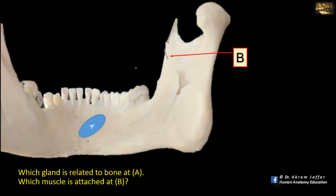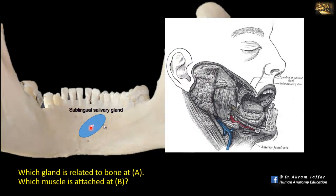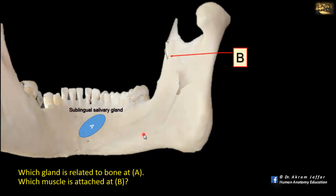Which gland is related to bone at A, and which muscle is attached at B? This is a view of the inside of the mandible. You can see the mylohyoid line — above it we are in the mouth cavity, and below it is the neck or submental region. The gland located in the floor of the mouth above the mylohyoid line is the sublingual gland, situated in the sublingual fossa. The fossa below the mylohyoid line is produced by the submandibular gland, and it is called the submandibular fossa.